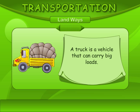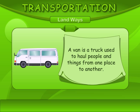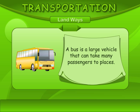A truck is a vehicle that can carry big loads. A van is a truck used to haul people and things from one place to another. A bus is a large vehicle that can take many passengers to places.